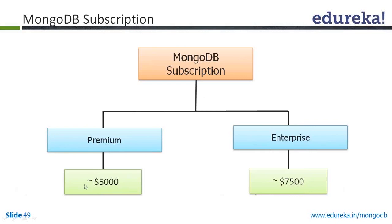In the Premium subscription, the charges are approximately $5,000 per year. The Enterprise subscription is $7,500 per year. Everything will essentially be the same between them, but their SLA and other response commitments are different.